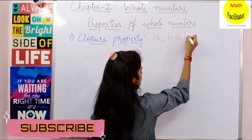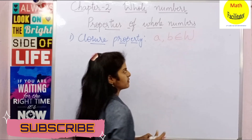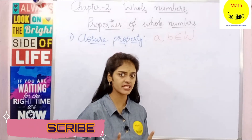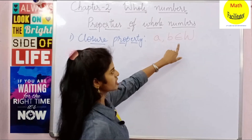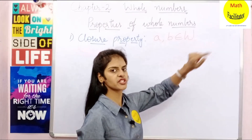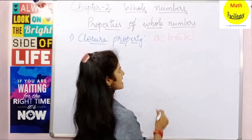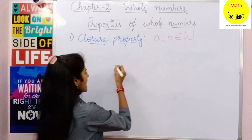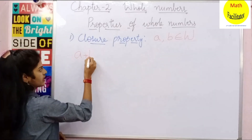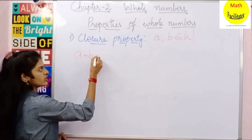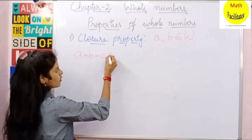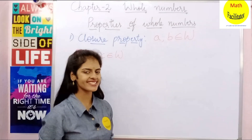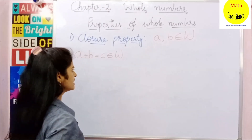A and B belong to whole numbers. We represent whole numbers using W, capital W. A and B are two numbers which belong to whole numbers. Then we sum, A plus B equals C. This C should also belong to whole numbers. Let us take one example.